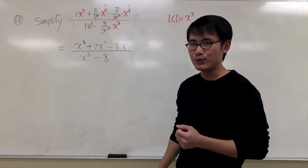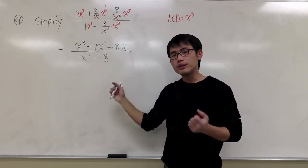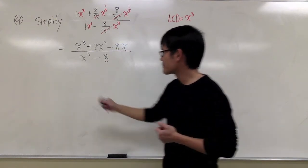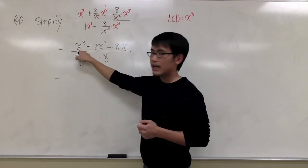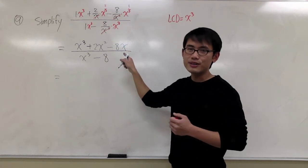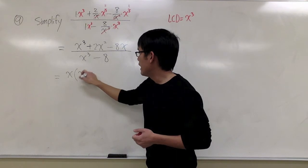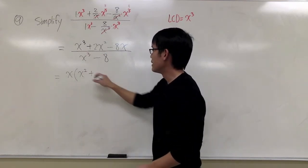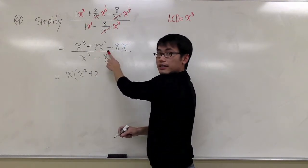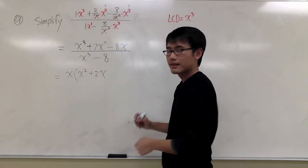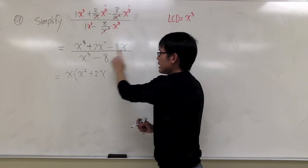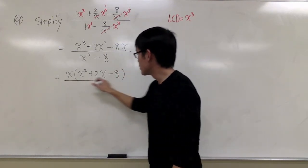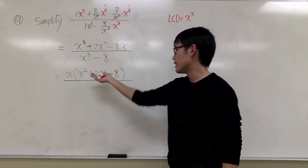Let's see if there's anything else we can do. Whenever you have a rational expression, we try to factor it and see if there are any common factors we can cancel from top and bottom. On the top, notice that I have x to the third power, x squared, and x — so I can first factor out an x. I get x squared left in the first part, plus 2x (originally x squared, took one out), and minus 8 (originally minus 8x, the x is now outside the parentheses). So the top factors as x times (x squared plus 2x minus 8).